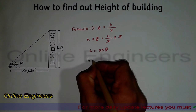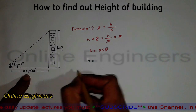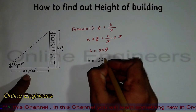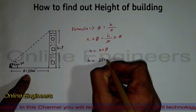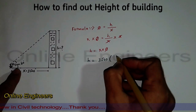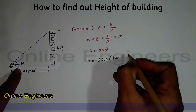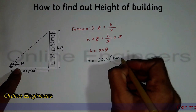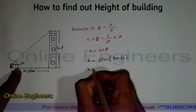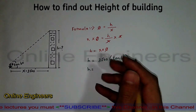H is equal to X, which is three thousand five hundred feet, multiplied by tan θ, where theta is 60 degrees. Now calculate these values.